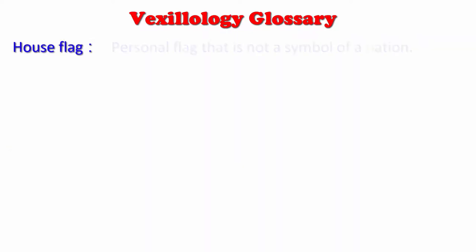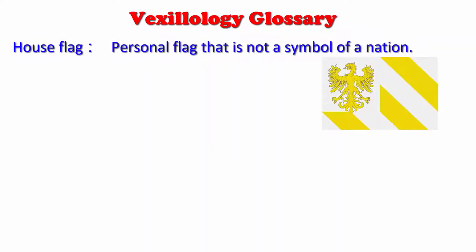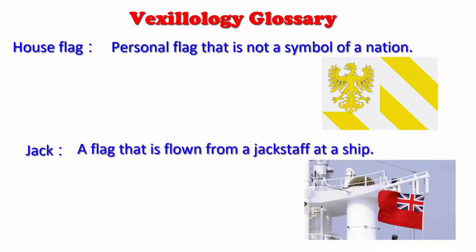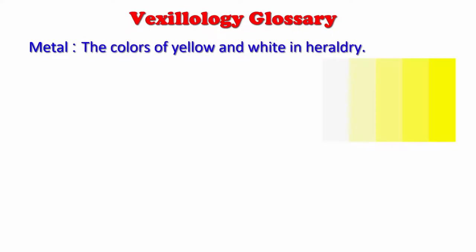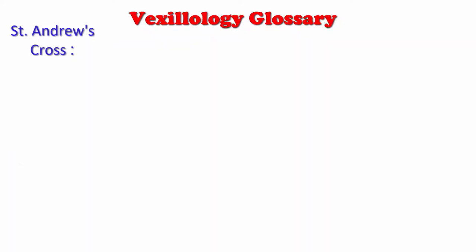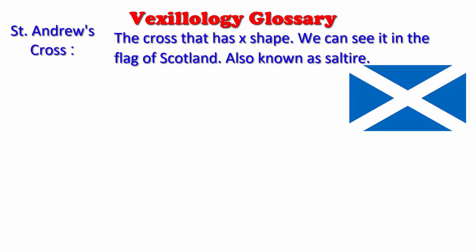House flag: a personal flag that is not a symbol of a nation. Jack: a flag that is flown from a jack staff at a ship. Metal: the colors of yellow and white in heraldry. Pennant: a triangular flag. St. Andrew's Cross: the cross that has an X shape.